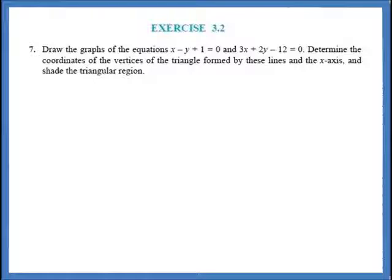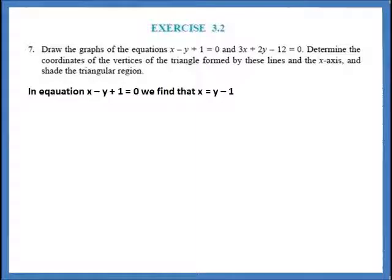So there are two equations given. You have to draw two lines in this graph. The first intersection point will be the first vertex of the triangle, the other vertices will be where the two lines meet the x-axis. So we will be able to identify three points for this triangle.